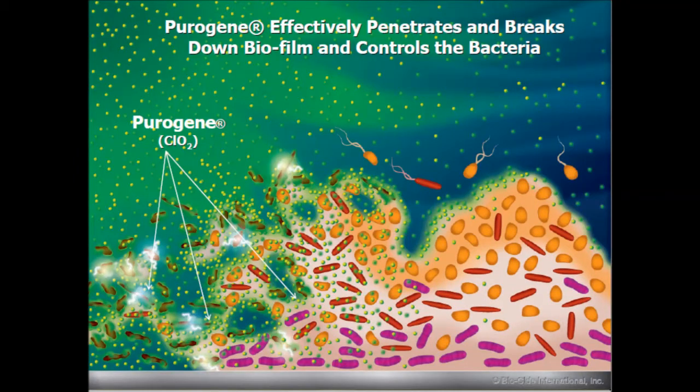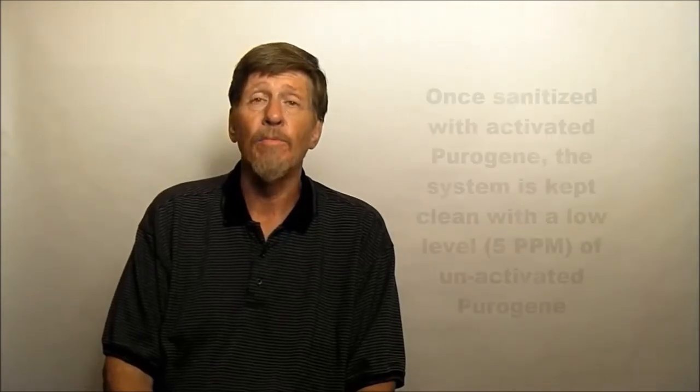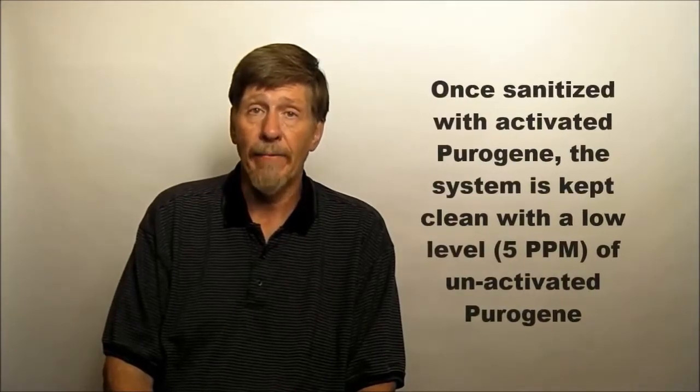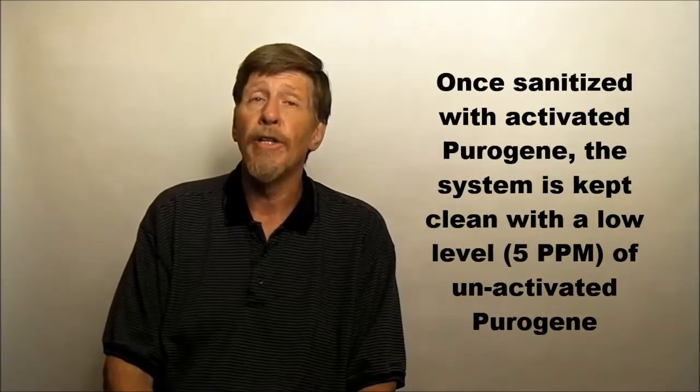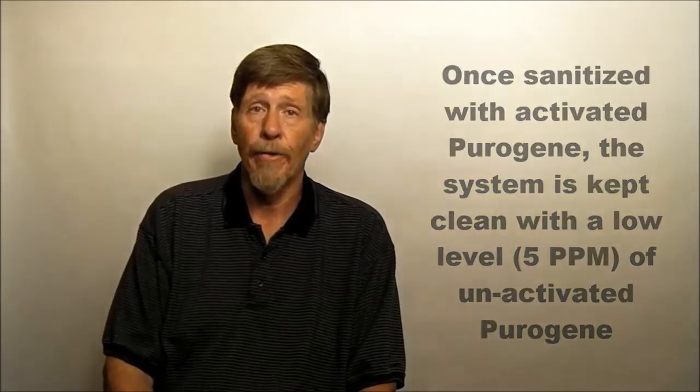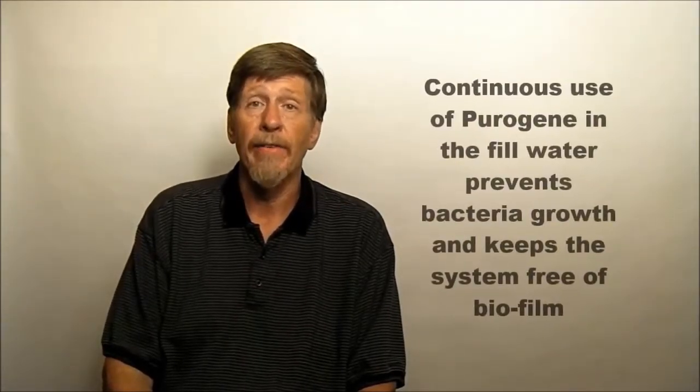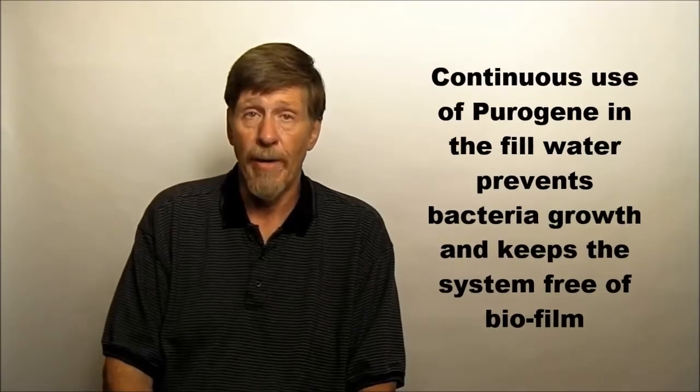This illustration shows how activated Purigene penetrates the biofilm, breaking it down and killing the bacteria. It effectively destroys the bacteria clear down to the interior surfaces where it's attached. The system is kept clean by maintaining a small residual amount of unactivated Purigene in the water to continuously prevent new bacteria growth. But stopping the addition of Purigene each time new water is added to the system will lead to the reformation of biofilm.